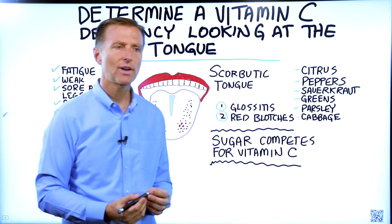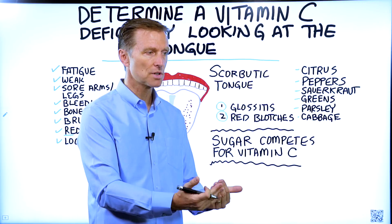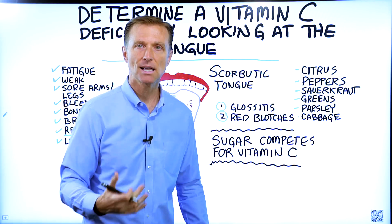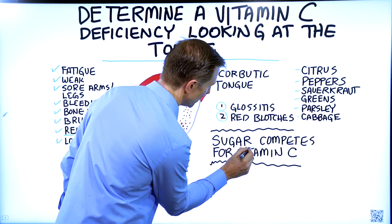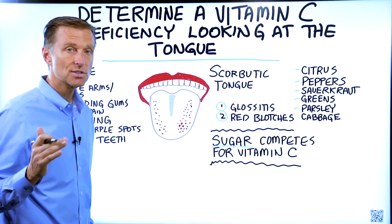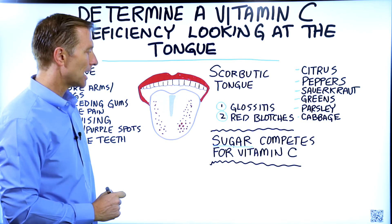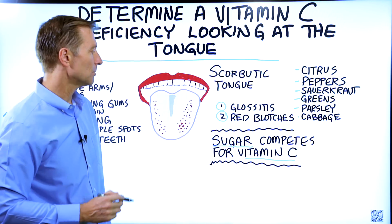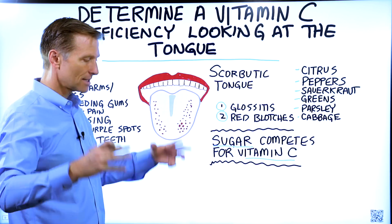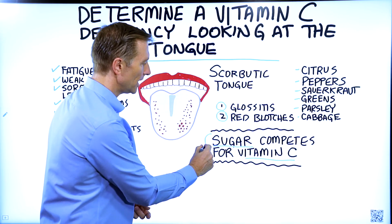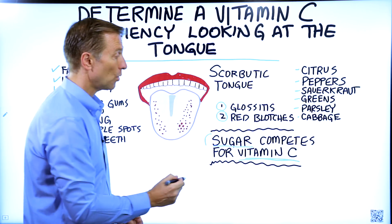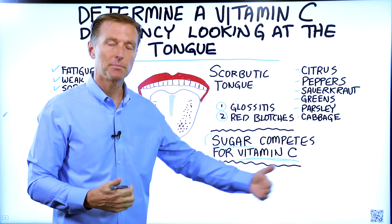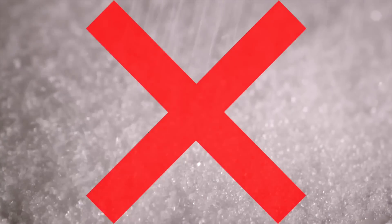There are other things that can create a deficiency by preventing the absorption of vitamin C. You may be consuming or supplementing vitamin C, but if you're consuming sugar — or you have high levels of sugar in your bloodstream because you're diabetic — that can block your vitamin C levels. The chemistry of vitamin C is very similar to sugar, so if you consume them at the same time, the sugar will get absorbed and the vitamin C will not. And I'm being very sarcastic here, because you don't want to consume any sugar at all.